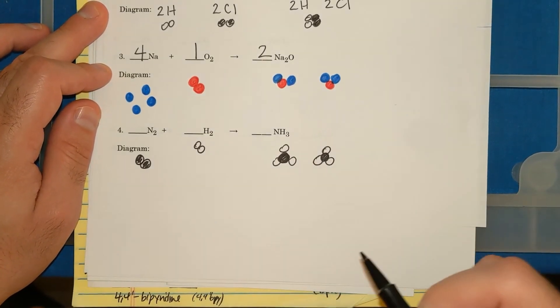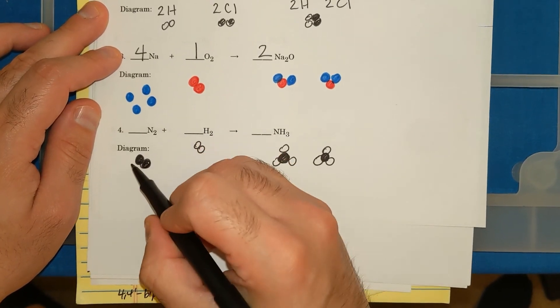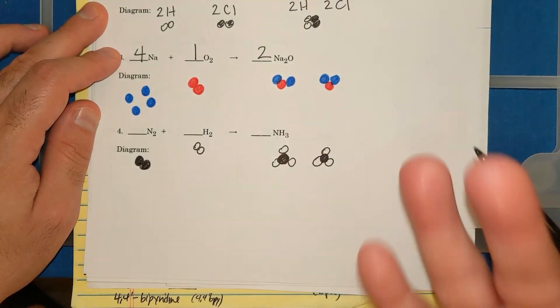NH3. Now, my N's are good on the left and right side. I have 2 N's here and 2 N's here. We're good.